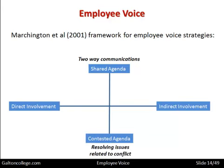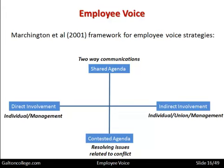The contested agenda is about trying to resolve issues relating to conflict — when there is a dispute between the two sides, there is a contested agenda and they are trying to resolve the issues. With indirect involvement, the individual relates to the trade union, and the trade union then links to management. So the individual does not deal directly with management; that is indirect. The direct form is when the individual deals with management directly, with no involvement of a trade union.